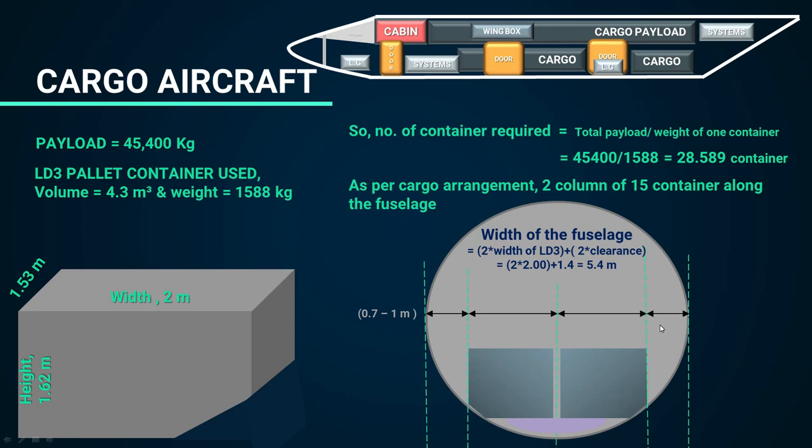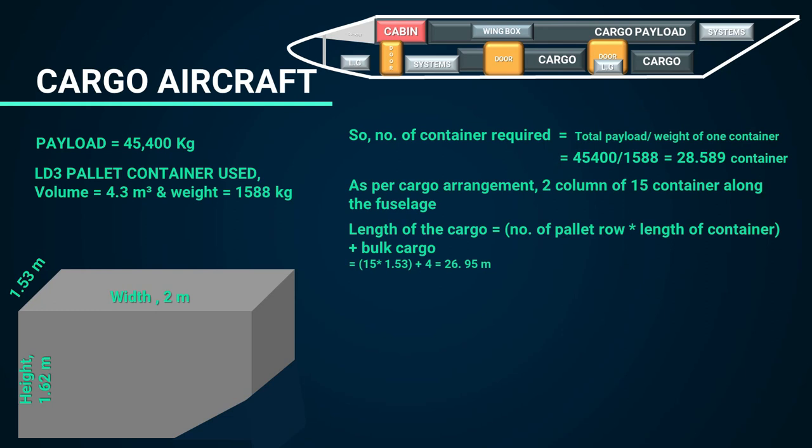For the number of cargo container rows: 15 rows (14 plus 1 extra) multiplied by the container length plus bulk cargo. Bulk cargo is usually taken as 3.5 to 4 meters — here we consider 4 meters. So: 15 × 1.5 + 3 + 4 = 26.95 meters is the length of the cargo section.